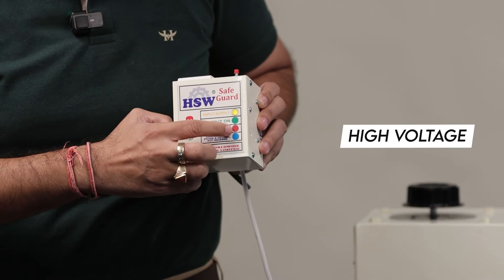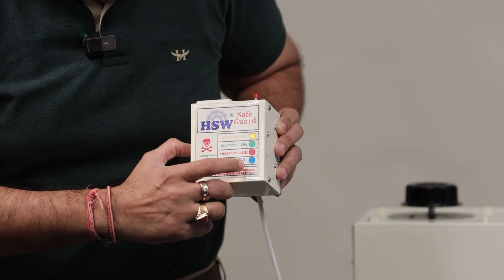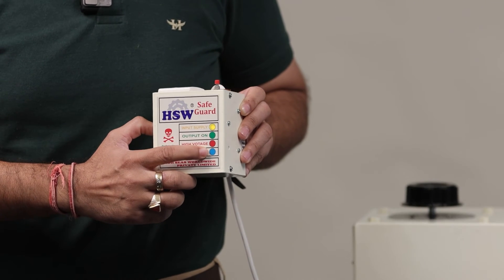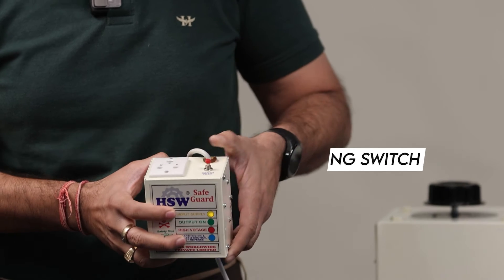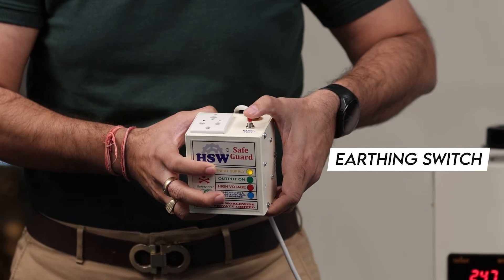So you can see here the yellow light is on and the second light output on is off right now because the power supply is not passing further. The third light you can see is high voltage and the fourth light you can see is neutral and earthing test. And over here you can see the earthing test switch.